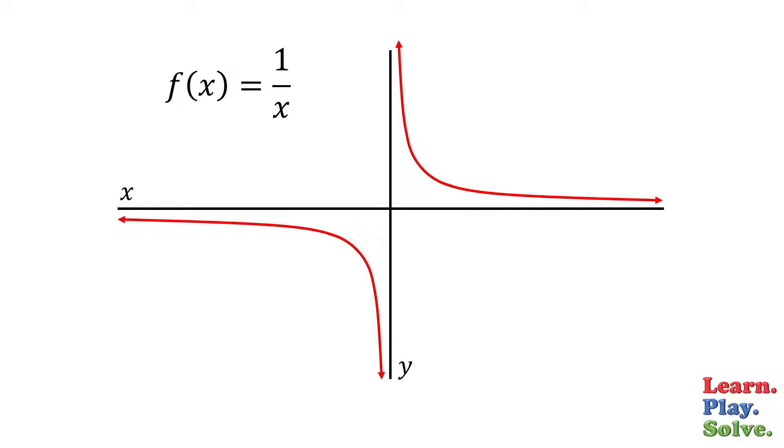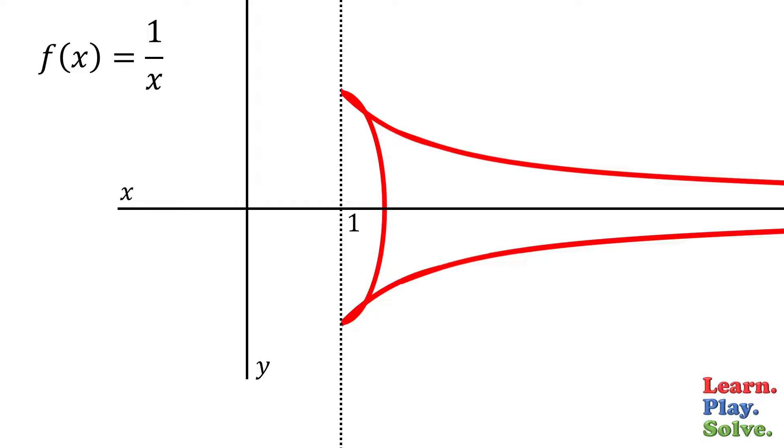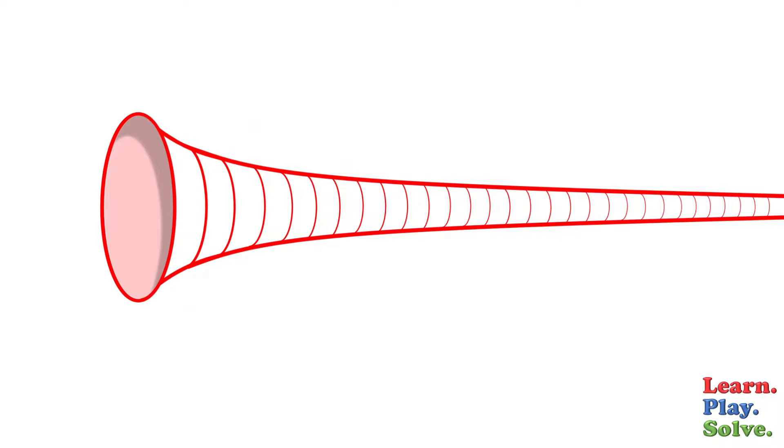If you take this function from 1 to infinity and revolve it around the x-axis, you will get a trumpet-like shape that gets thinner and thinner but never ends. This is called Gabriel's horn.